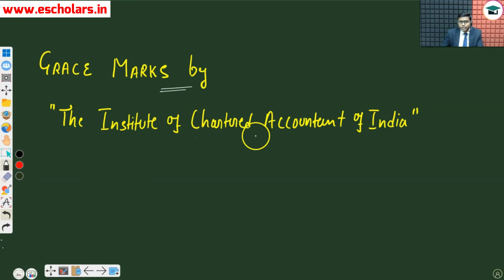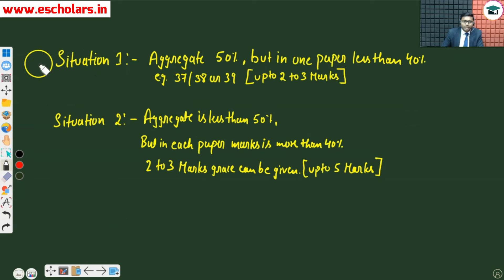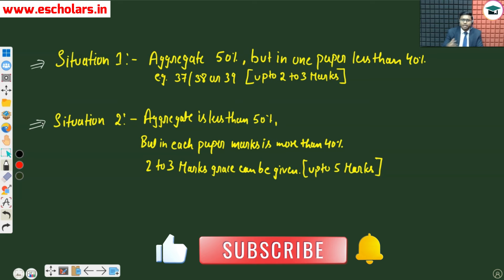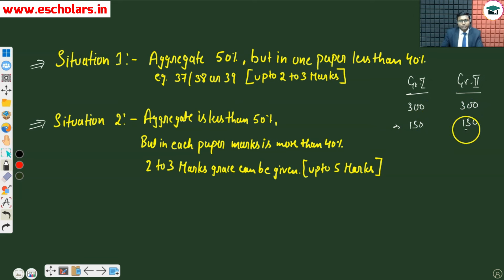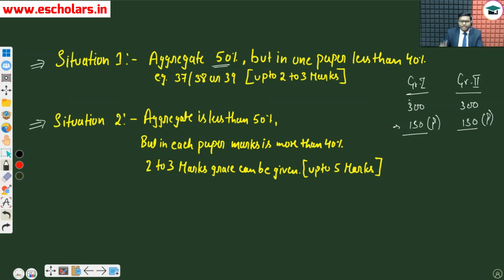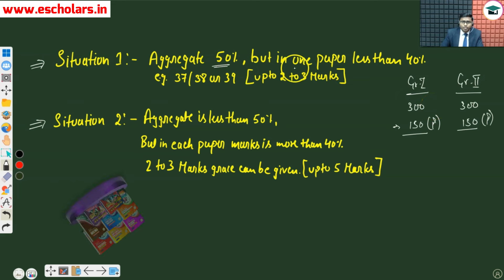So, grace marks by the Institute of Chartered Accountants of India — what way does our institute give grace marks? There are two situations in which the institute can allow grace marks. Let's talk about Situation 1. As you know, whether you give Group 1 or Group 2, both groups have 300 marks each across their papers. To pass, you need 150 marks. The institute says: first condition — suppose your aggregate is 50% or more than 50%, meaning more than 150.